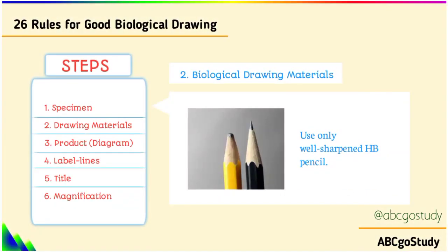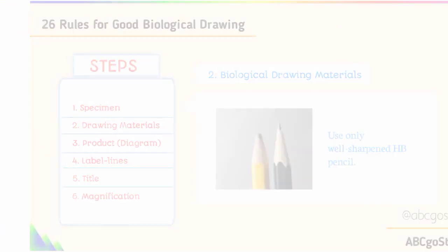Number two, drawing material type. Use only a well-sharpened HB pencil. Some say 2H and other types, but understand that you need a pencil that is well sharpened and will bring out your diagram clearly. You could need an extra pencil, a blade, or a sharpener.